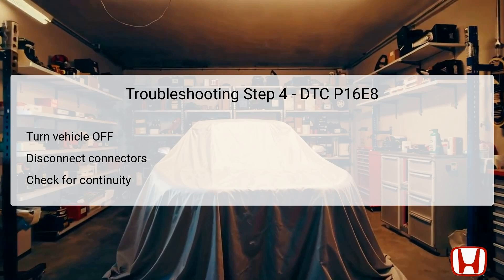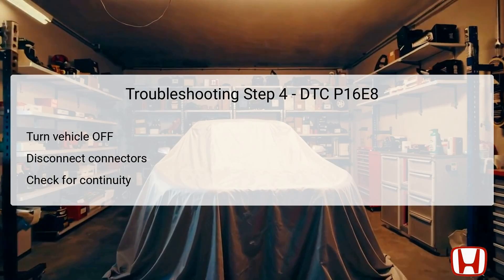The fourth troubleshooting step begins by ensuring that the vehicle is in the off-lock mode to safely perform electrical disconnections. Disconnect the 4P connectors from both the upper and lower shutter grille to isolate the issue further. After disconnecting these connectors, you will check for continuity between test points within the shutter grille wiring system. This test is crucial to determine if there is an uninterrupted electrical path, which would indicate healthy connections and wiring. The continuity testing should confirm whether the LIN circuit is complete and not experiencing any shorts or breaks. If continuity is detected, proceed to step five; if not, advance to step six to address potential wiring failures.